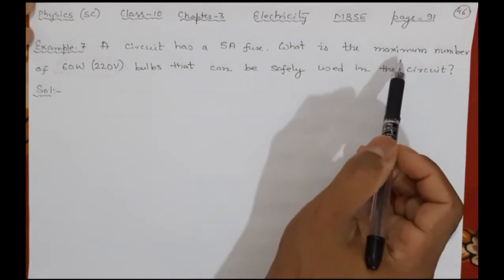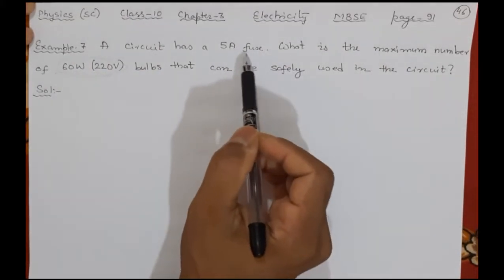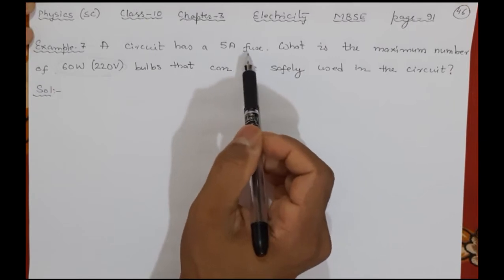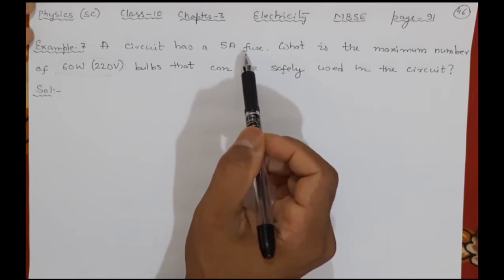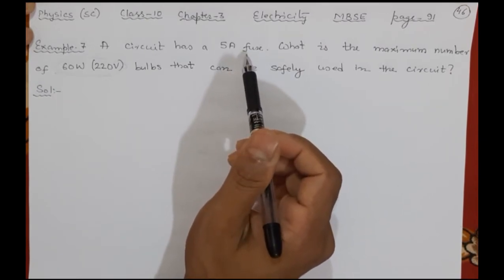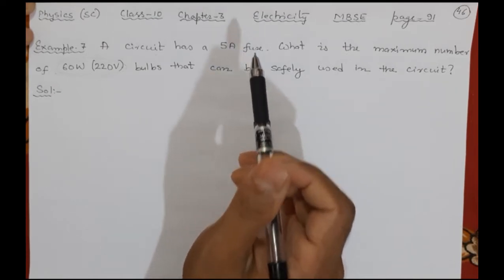How many numbers maximum can I use so that 5 ampere fuse is not damaged? So I have to find how many numbers? 1, 2, 3 like that. So that number I have to find here.